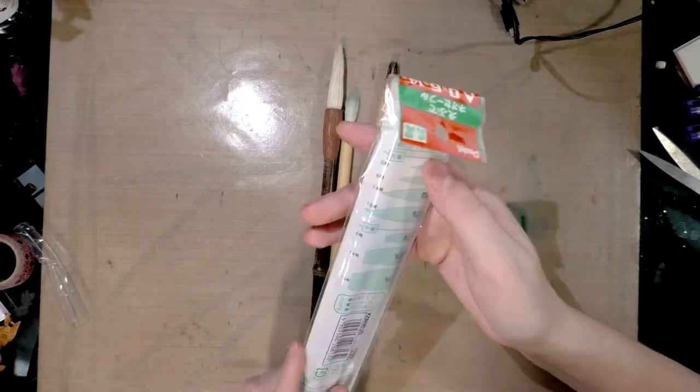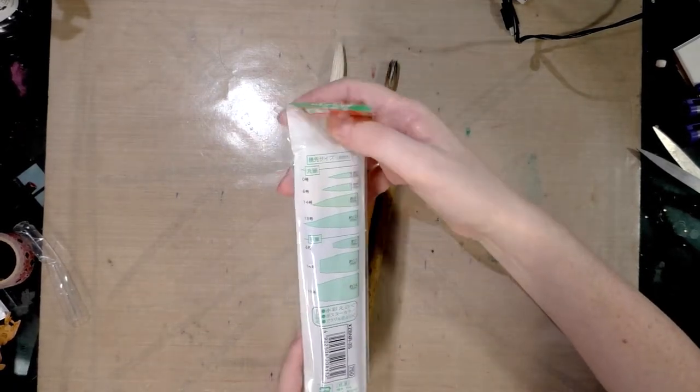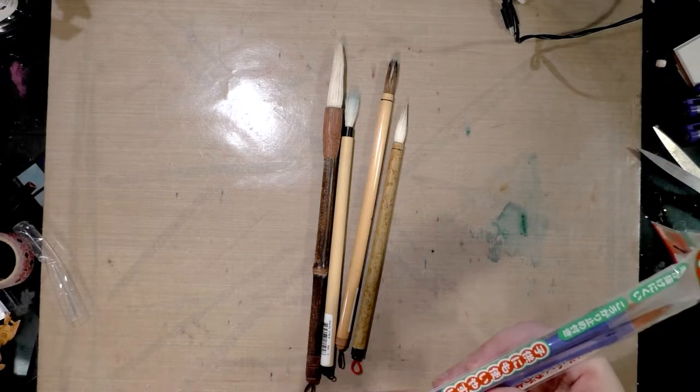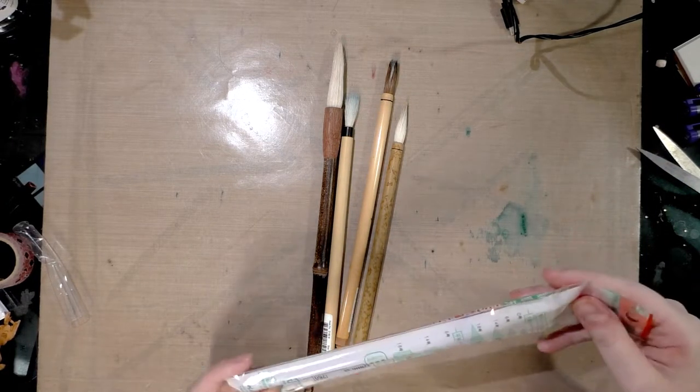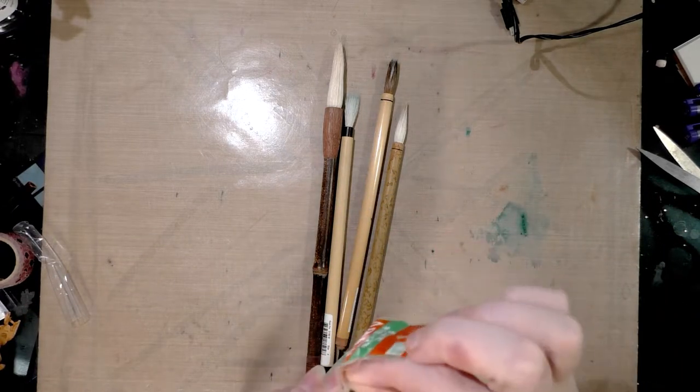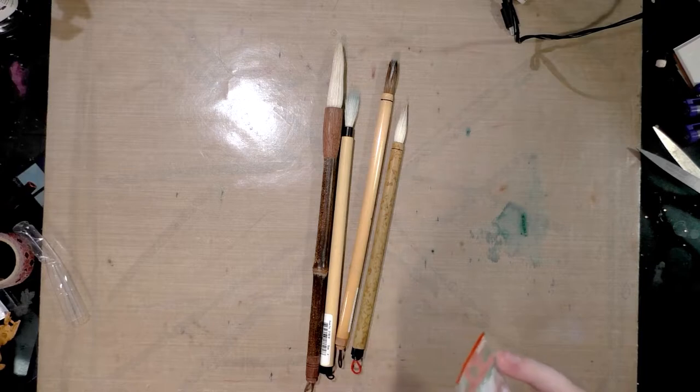Now we're going to take a look at the Neo Sable. And it's got a sizing guide on the back. And I ordered these from Amazon, of course, where I get all my art supplies.